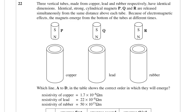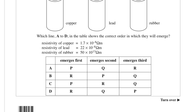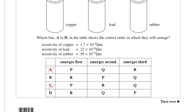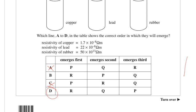Three vertical tubes made from copper, lead, and rubber respectively have identical dimensions. Identical strong cylindrical magnets P, Q and R are released simultaneously from the same distance above the tube. Because of electromagnetic effects, the magnets emerge at different times. We can look at the resistivities. The one with the lowest resistivity would be copper, so that would have the highest current. The next highest current would be lead, and you'd get basically no current in rubber. So you'd expect it to emerge first from the rubber, then next you'd have the lead, which was Q. So the answer is D, and it's all to do with the resistivity.